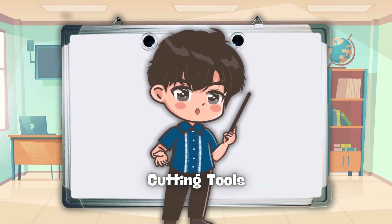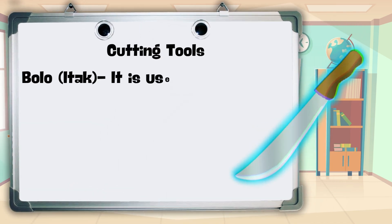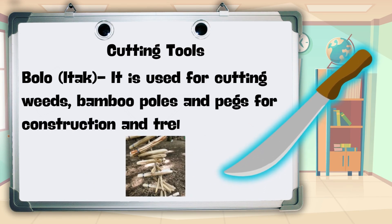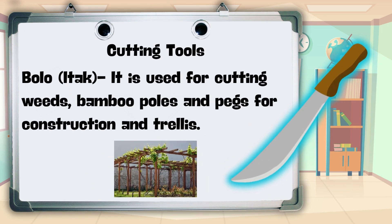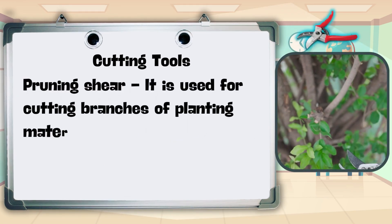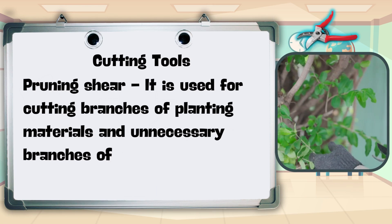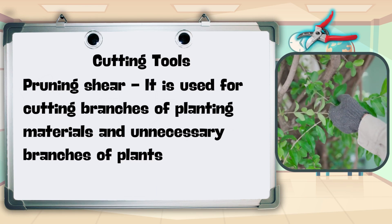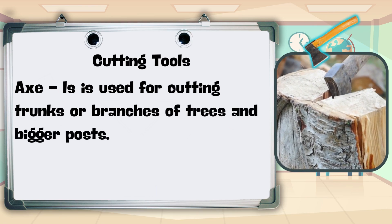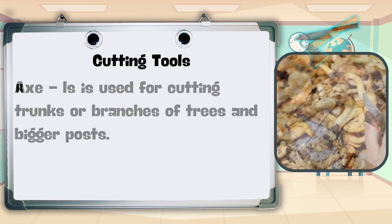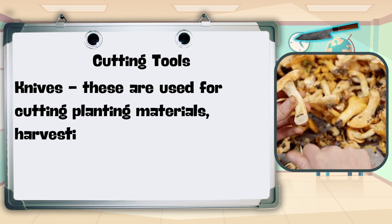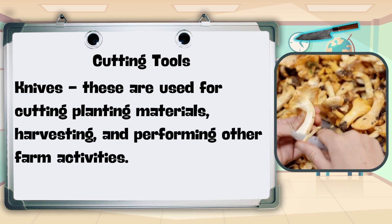For cutting tools: bula or itac — used for cutting weeds, bamboo poles, and pegs for construction and trellis; pruning shear — used for cutting branches of planting materials and unnecessary branches of plants; axe — used for cutting trunks or branches of trees and bigger posts; knives — used for cutting planting materials, harvesting, and performing other farm activities.